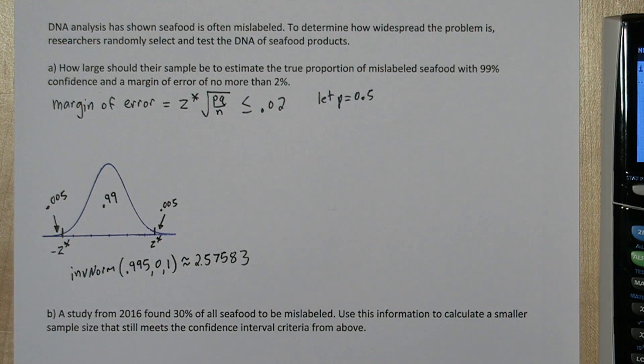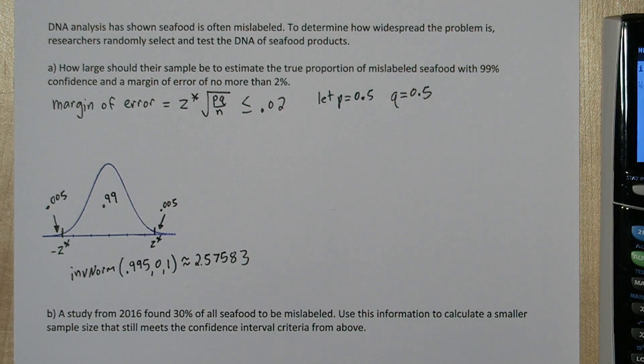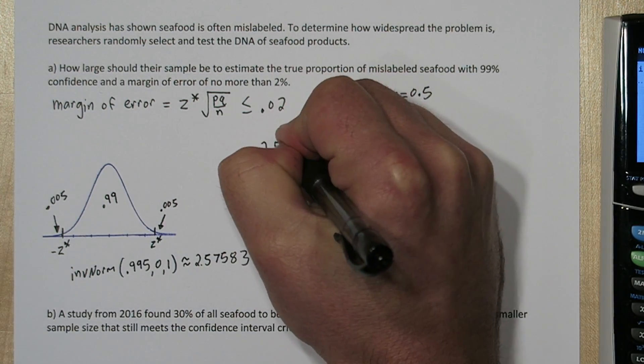So we're going to let p equal 0.5, which makes q, the complement, also equal to 0.5. Now let's fill the values into our formula.